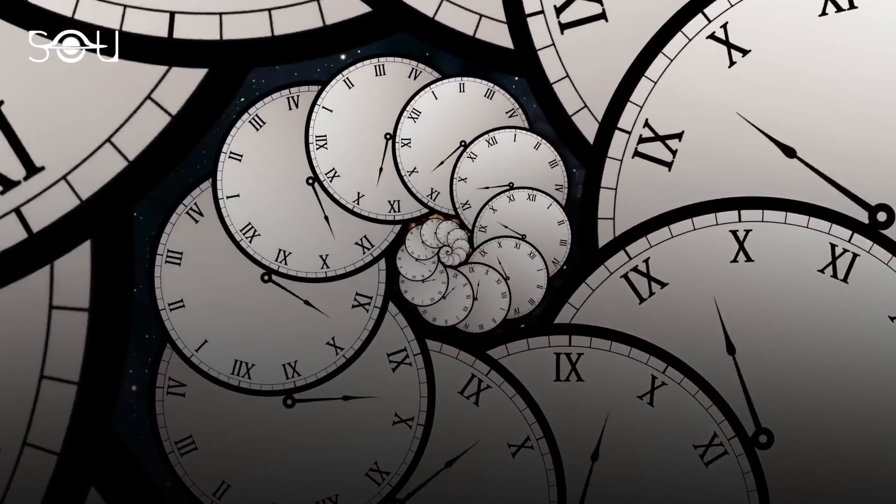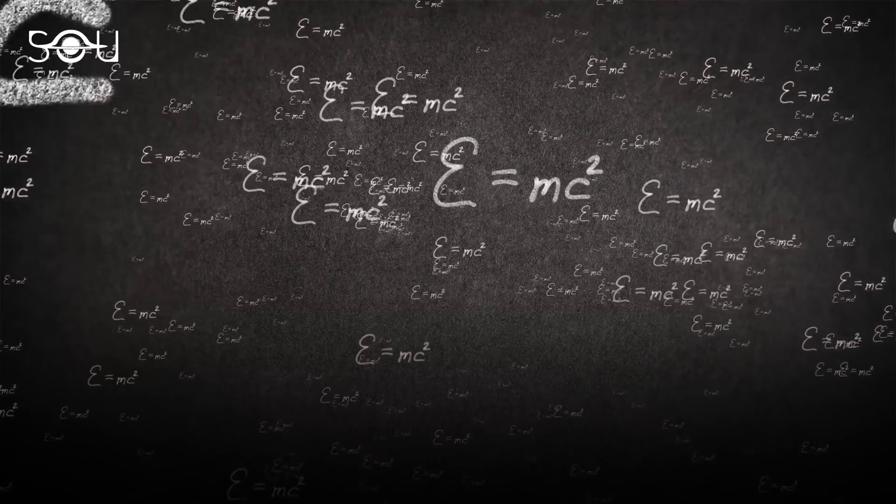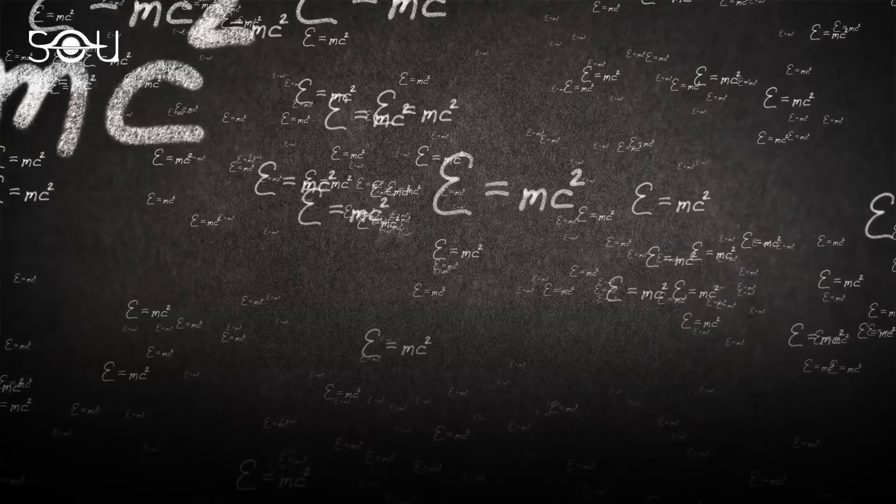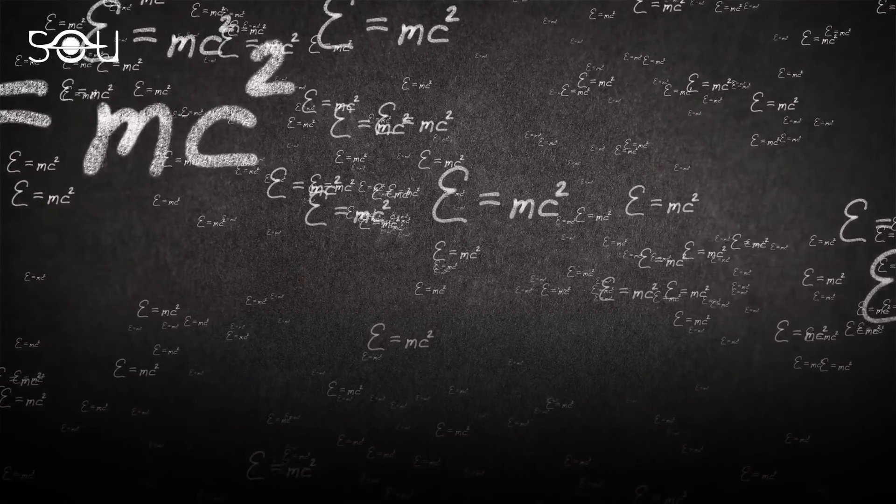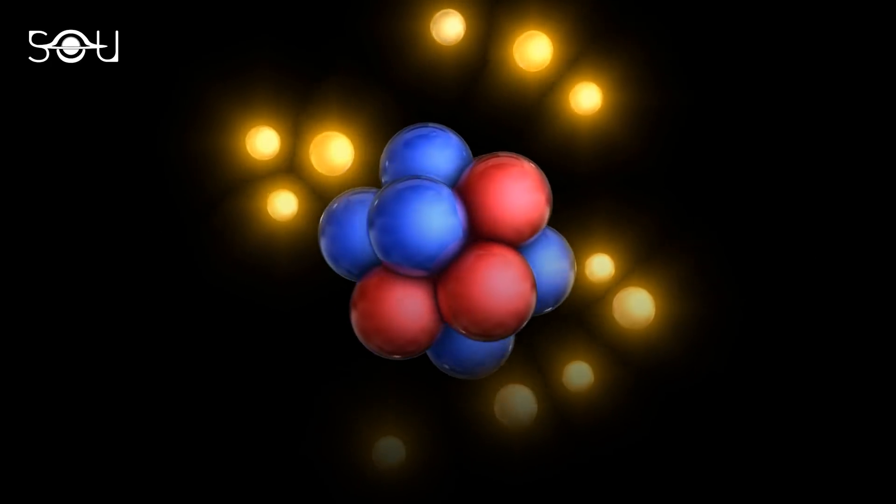But he didn't stop. In 1905, he published his fourth paper introducing the flagship equation of physics, E equals mc squared. This equation tells the relationship between mass and energy.